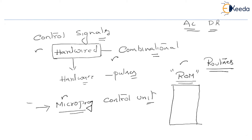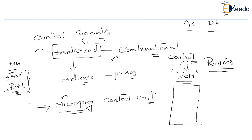In the micro-programmed control unit, a designer is going to obtain a ROM of some capacity in which he will write several routines and store them, then use this ROM as the control unit of the system. Here, there are no encoders, no decoders, no multiplexers, and no gates — simply, we just have some ROM. This is an additional ROM, different from the RAM and ROM already in main memory. This additional ROM, in which all control signals are programmed, is called the control memory.